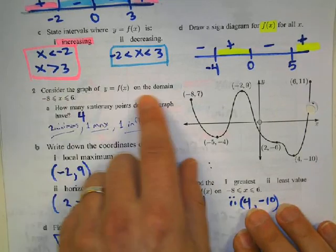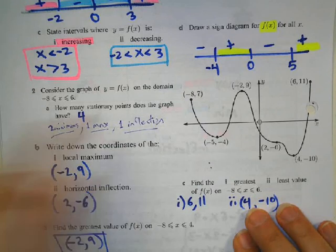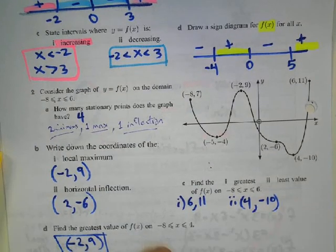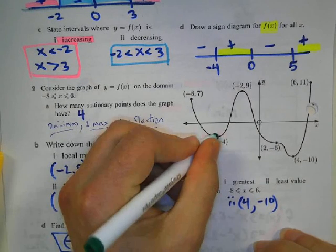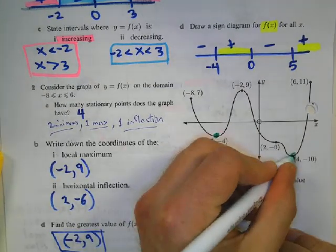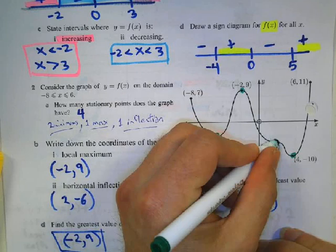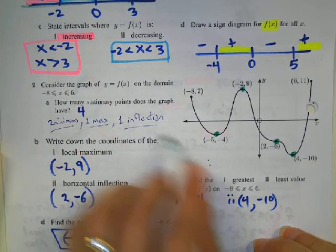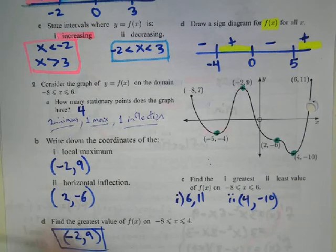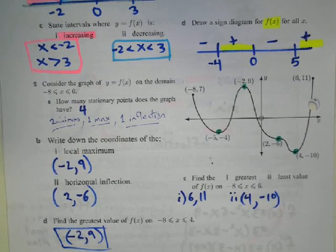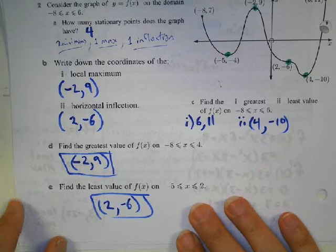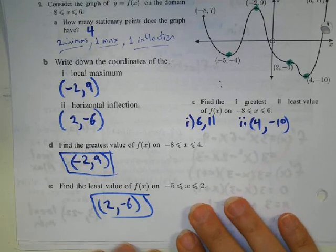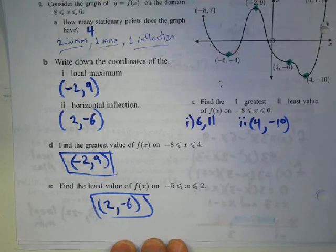Consider the graphs. How many stationary points? We've got one minimum, another minimum, a maximum, and an inflection point — four stationary points total. Write down the coordinates of the local min and max. This should be self-explanatory; let me know if you have a question.